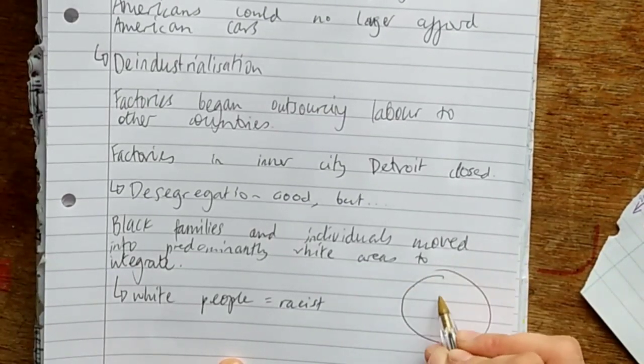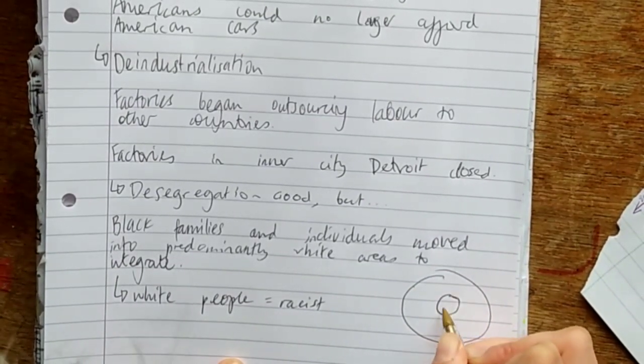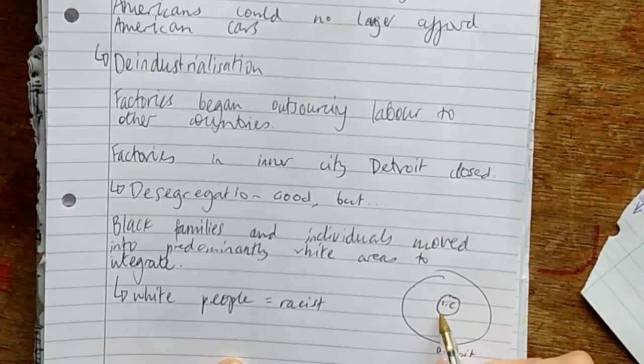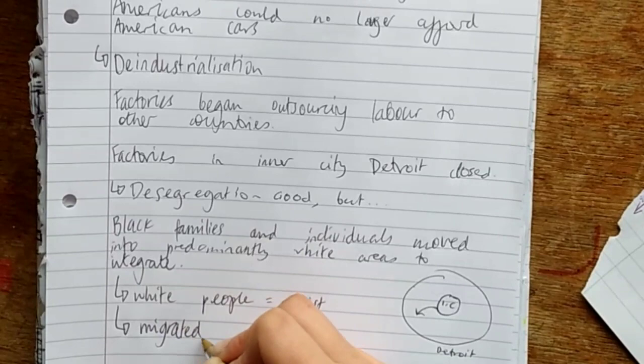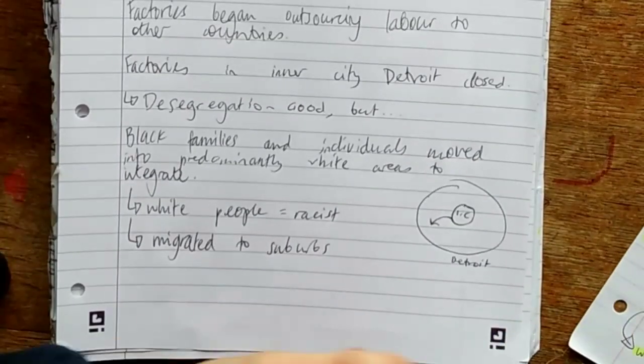This created an urban donut. You can see here I'm drawing Detroit. There's the inner city there. Whereas previously it was mixed, white people are moving out to the suburbs. This is called white flight.